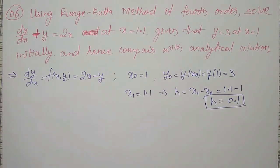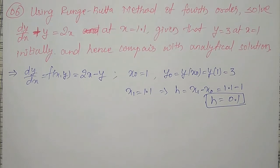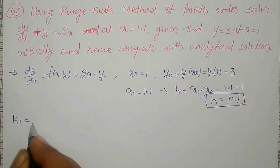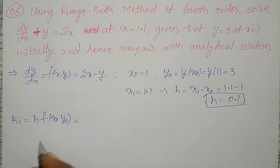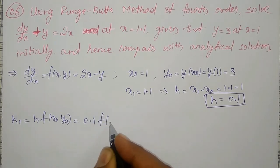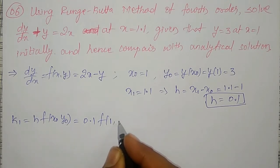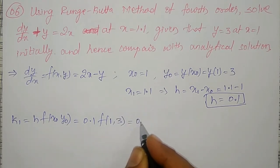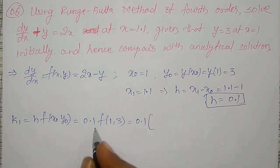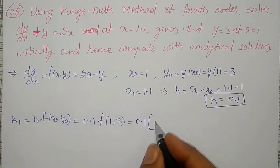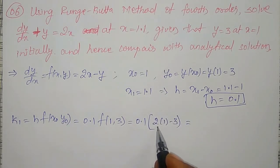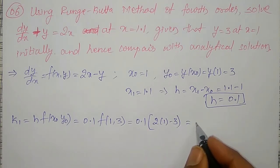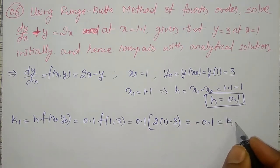If h equal to 0.1, then using Runge-Kutta method, I have to calculate k1, k2, k3, k4. Therefore k1 is given by h into f(x₀, y₀). h value is 0.1, x₀ is 1, y₀ is 3. That is 0.1 into f(1, 3). f(x,y) is 2x minus y, so 0.1 into (2 into 1 minus 3), which is 0.1 into (2 minus 3), which equals minus 0.1. This is my k1 value.